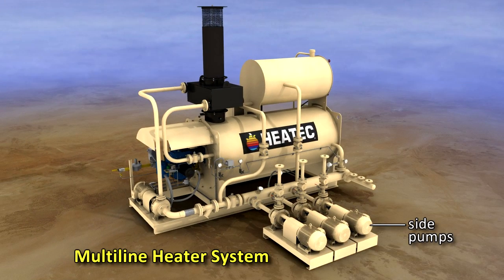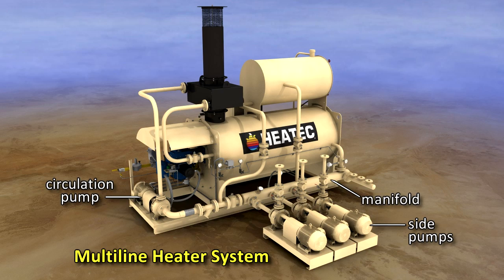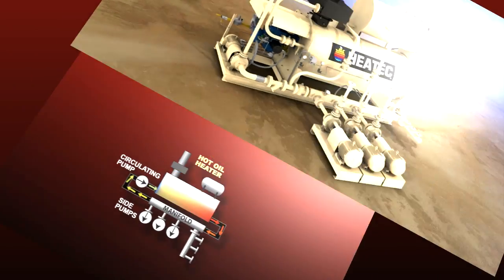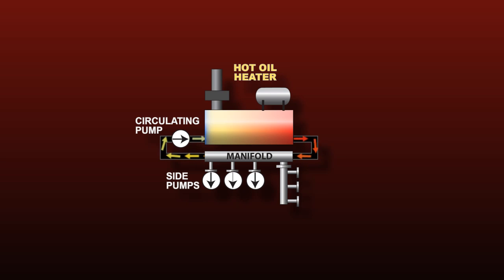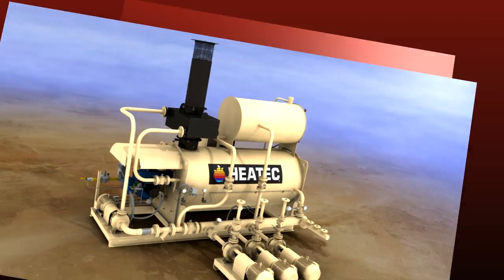A multi-line heater with side pumps overcomes those drawbacks. However, it requires additional pumps, which add to the cost of the system. The multi-line heater has a circulation pump and manifold. The circulation pump serves solely to recirculate the oil through the heater coil, assuring optimal flow through the coil regardless of flow through other components in the system. This prevents overheating the coil and extends its life.